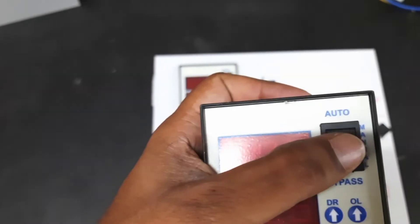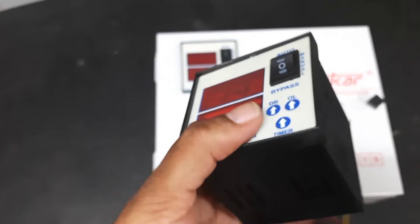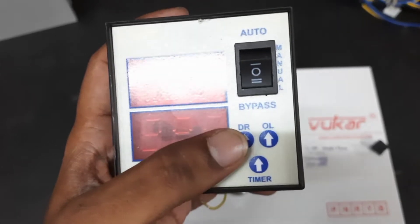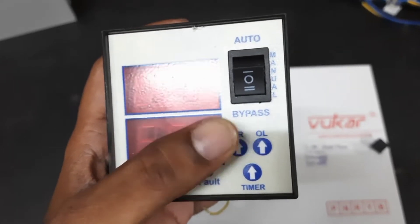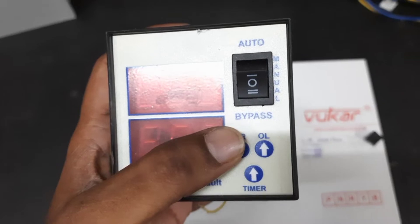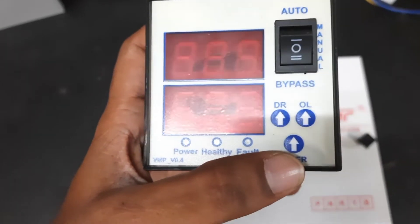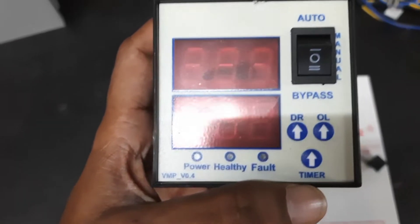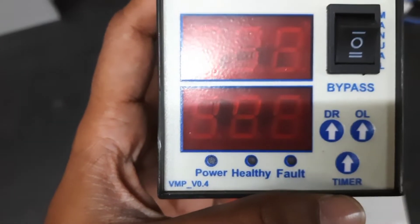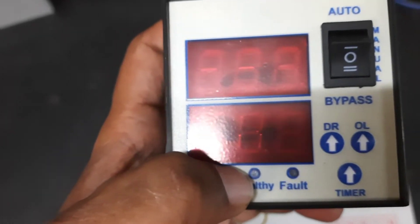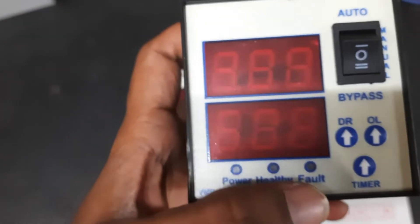The switch is used for auto operation, manual operation, and bypass operation. Three switches are given. These switches are used to set the dry run current, overload current, and timer. Three indications are provided: one is a power indication, second one is a motor healthy indication, and third one is a fault indication.